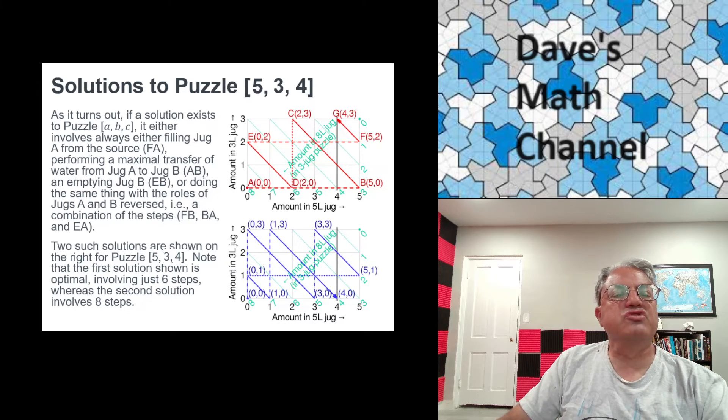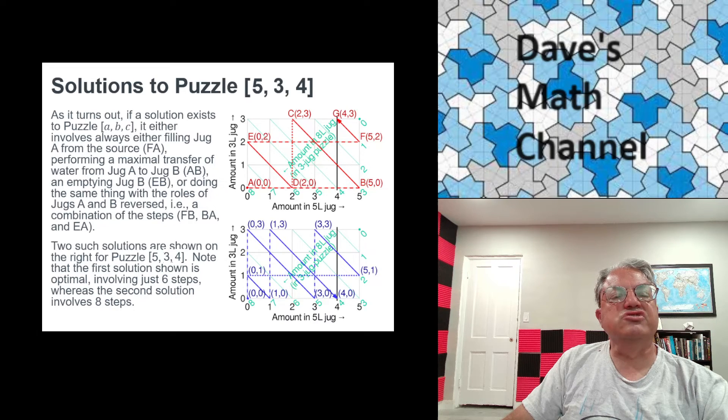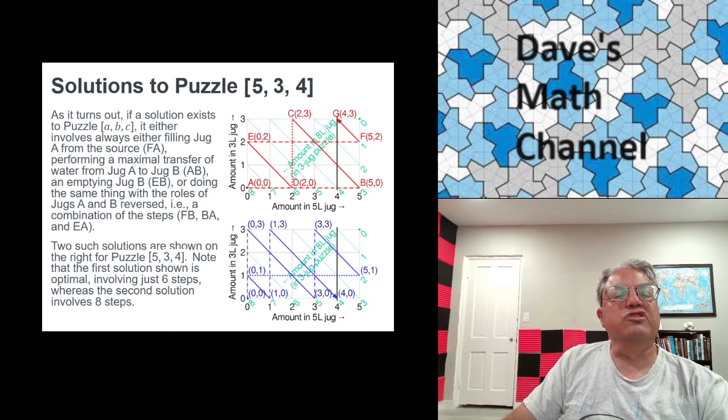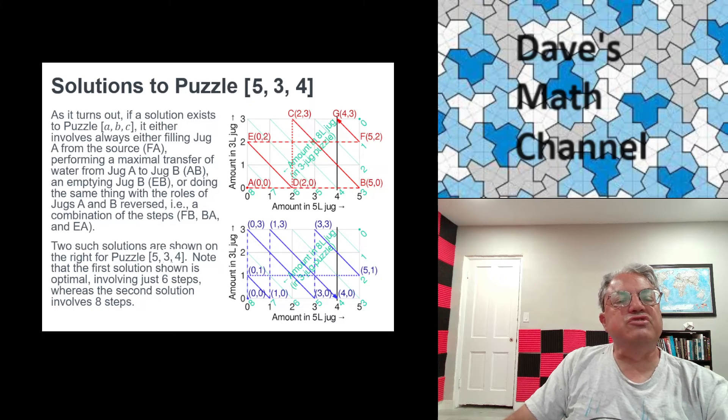The last step, there's only one more step we have to do. And that's to transfer as much water as possible from jug A to jug B. And when we do that, notice that jug B only has two liters of water in it, so it can take one more liter. So we're actually emptying one liter of water out of jug A and filling jug B. And lo and behold, when we do that, we get four liters of water, which is exactly what we wanted. We get four liters of water now in jug A, which is what we wanted. We've solved the problem. We did it in six steps. So that turns out to be the optimal solution.